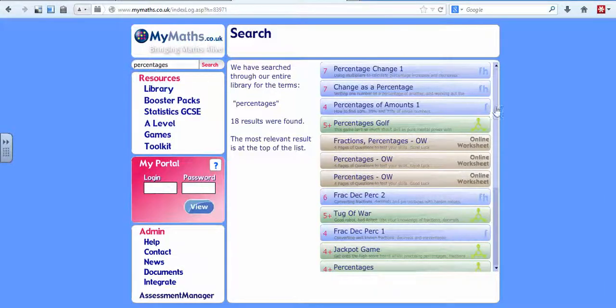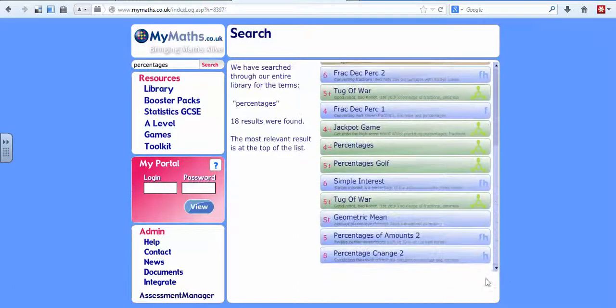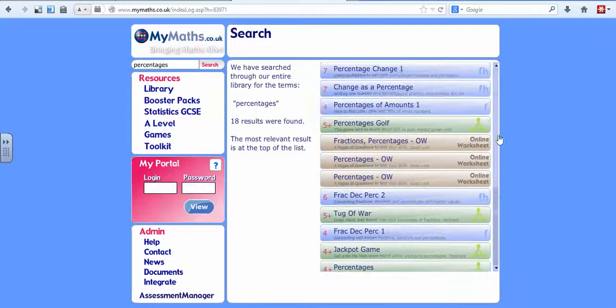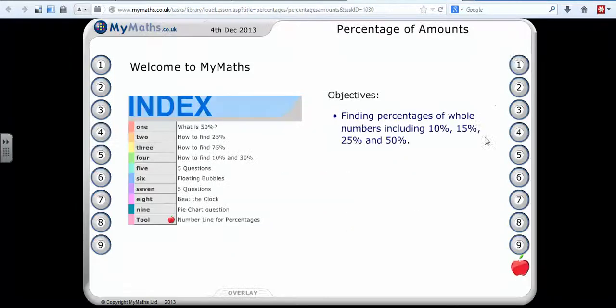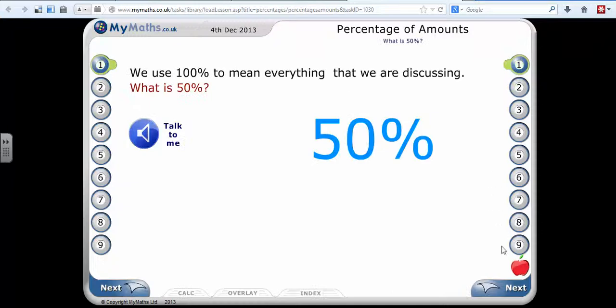I'm going to go to percentage amounts. If I scroll up or scroll down, percentage of amounts 2 we can see there and percentage of amounts 1 is here. I go into the lesson. The lesson has a sequence of slides. If there's a next button at the bottom of a slide, they press it and it will move through the various sections of that single slide.